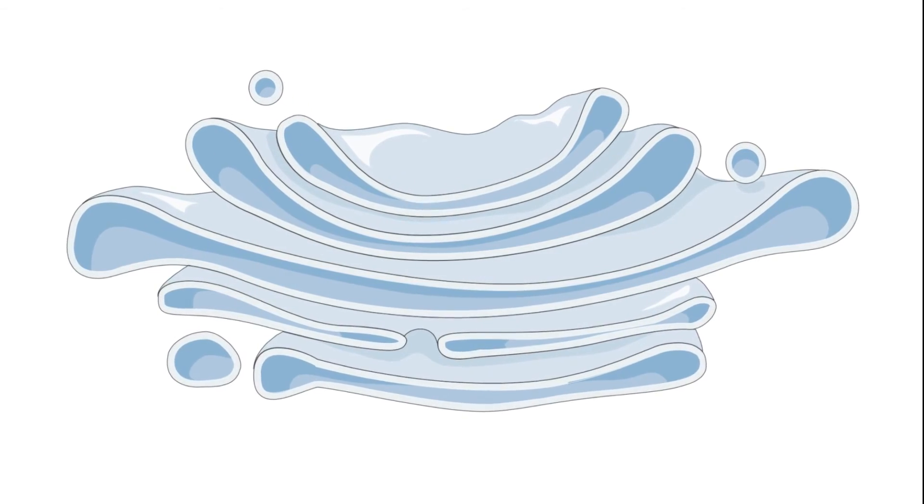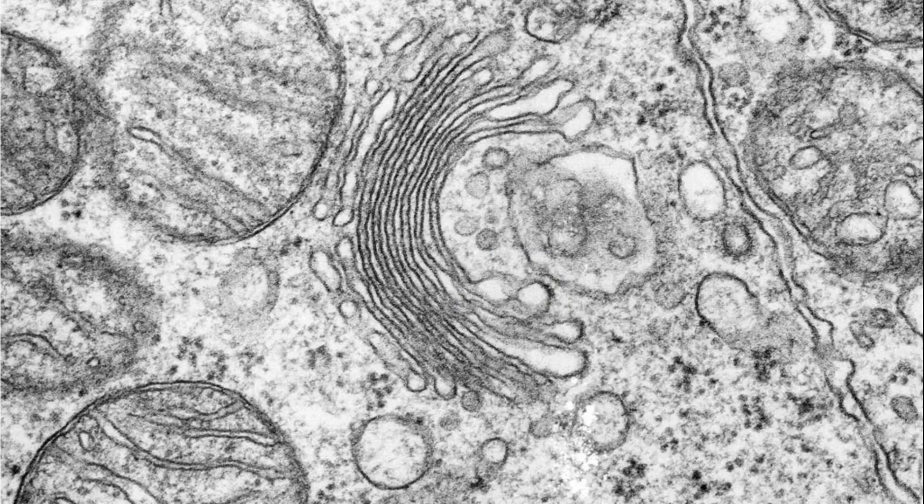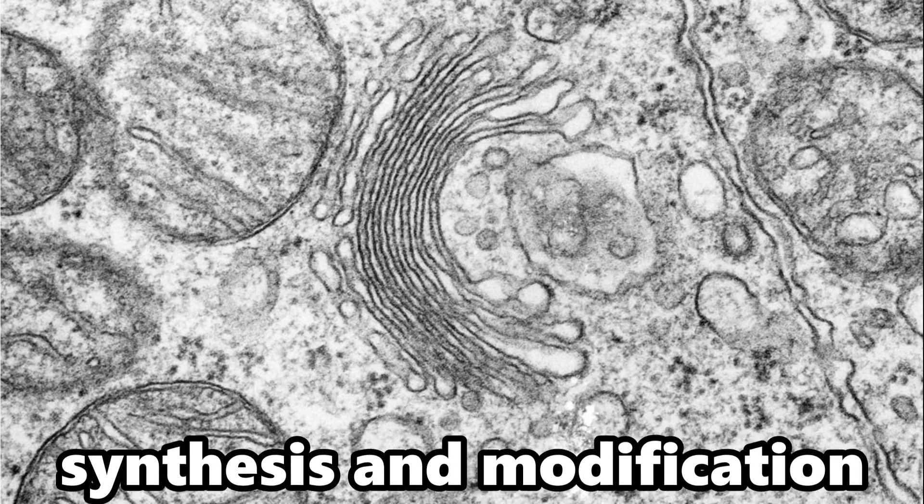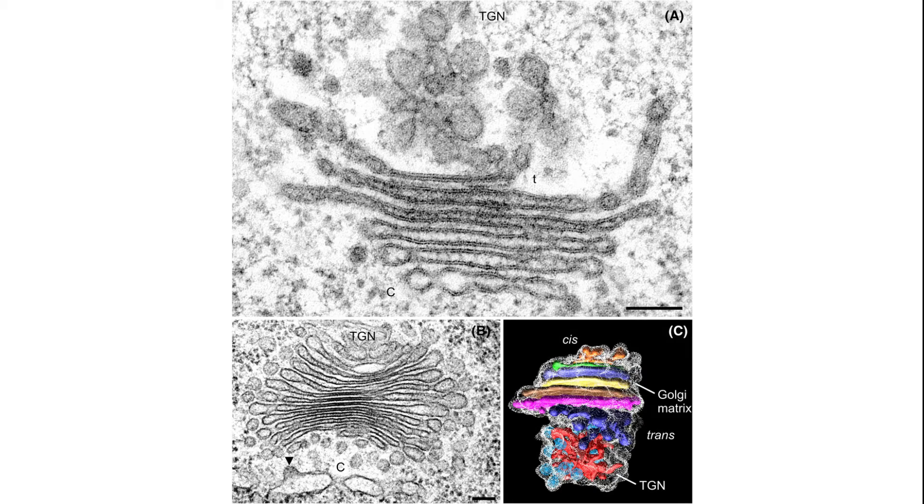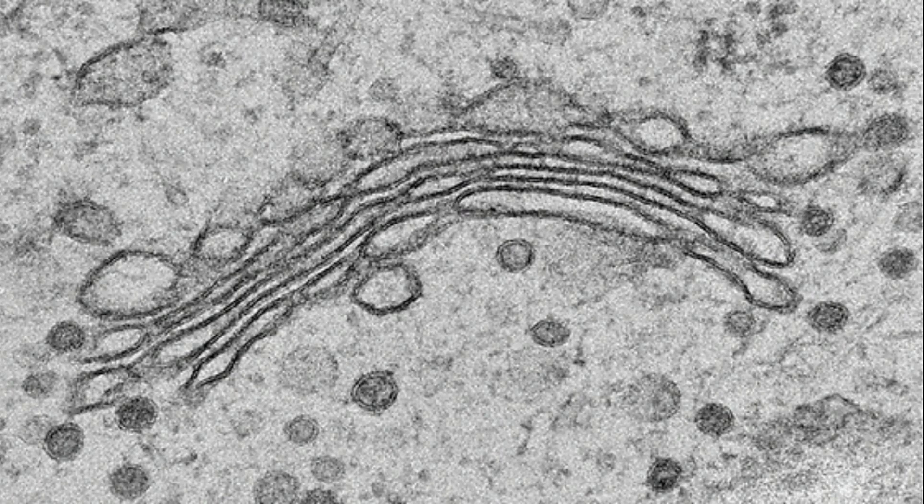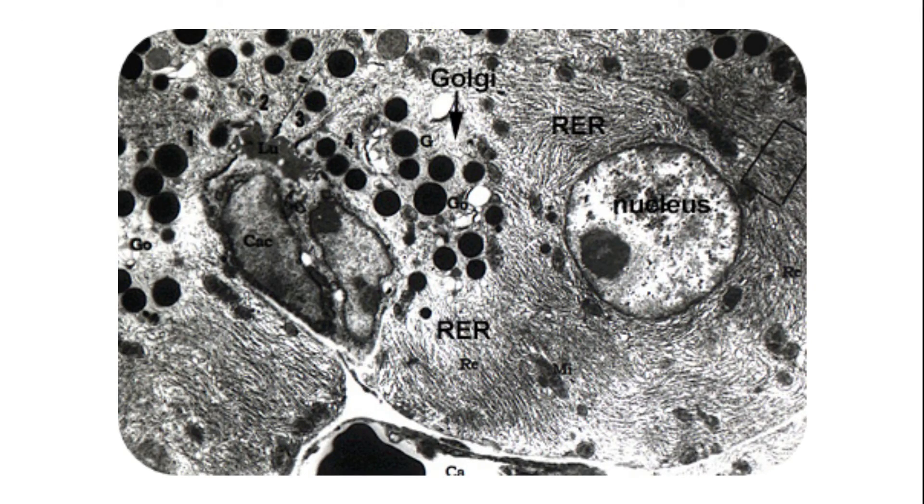Although the Golgi apparatus is primarily associated with protein processing, it also plays a crucial role in lipid metabolism, including the synthesis and modification of lipids. The Golgi apparatus acts as a quality control center, ensuring that only properly processed and modified proteins are allowed to continue their journey within the cell.